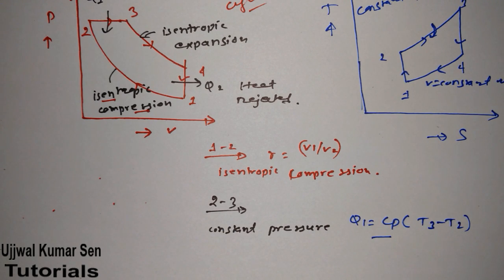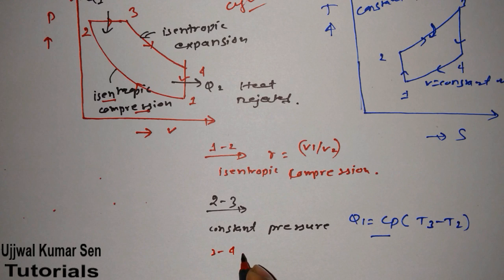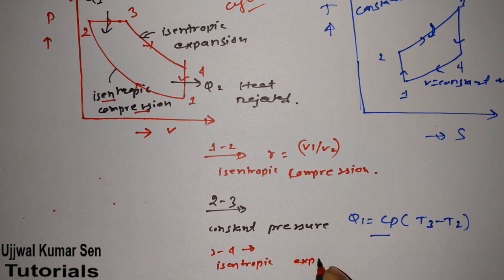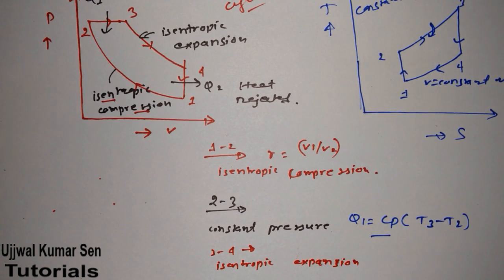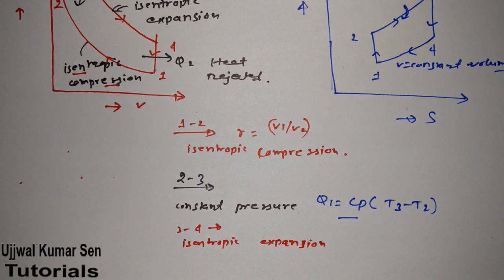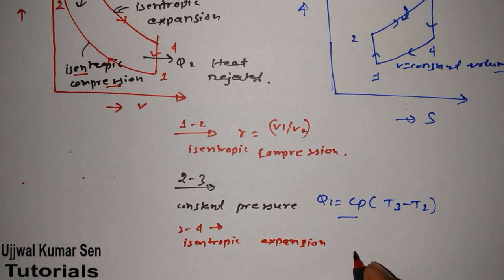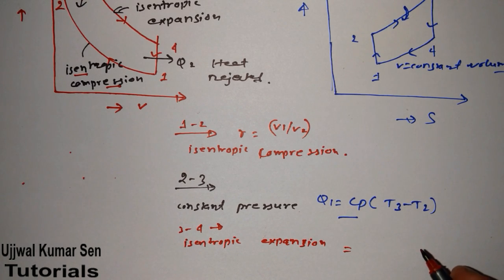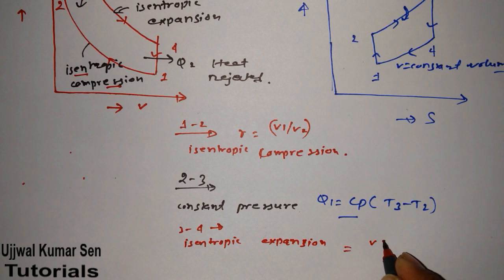Process 3 to 4 is the isentropic expansion process. The expansion ratio here is V4 by V3.